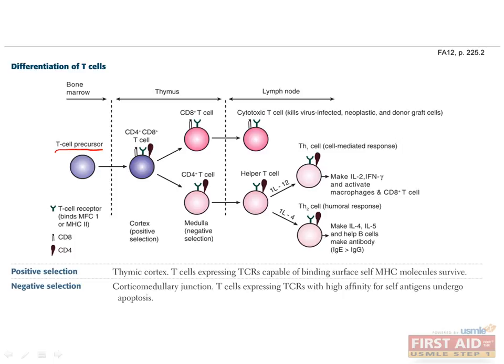T cells are involved in cell-mediated immunity. T cell precursors are produced in the bone marrow, after which they undergo positive and negative selection in the thymus. Under the influence of positive selection in the thymic cortex, T cell precursors are selected on the basis of their expression of CD4 and CD8. Negative selection of the medulla results in differential selection of either CD4-positive or CD8-positive T cells. T cells then migrate to the lymph node where they are presented with an antigen. CD8 cells, under the influence of appropriate co-stimulatory signals, assume the role of cytotoxic T cells that kill virally infected, neoplastic, and donor graft cells by inducing apoptosis. CD4 T cells, or helper T cells, under the influence of either IL-12 or IL-4, differentiate into Th1 or Th2 cells respectively.